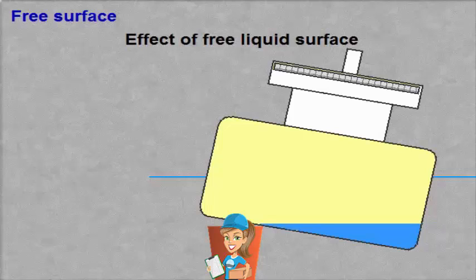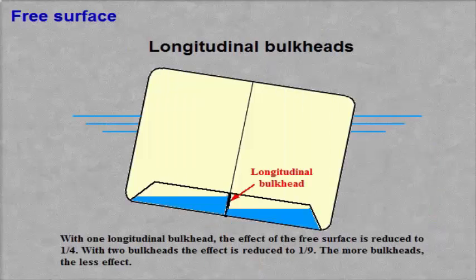With one longitudinal bulkhead, the effect of the free surface is reduced to one-fourth. With two bulkheads, the effect is reduced to one-ninth. The more bulkheads, the less effect.